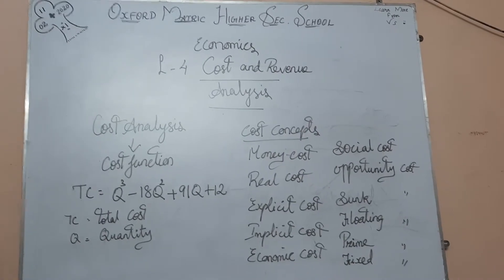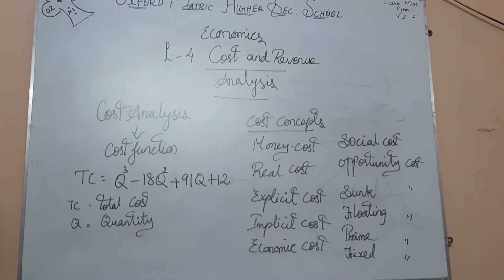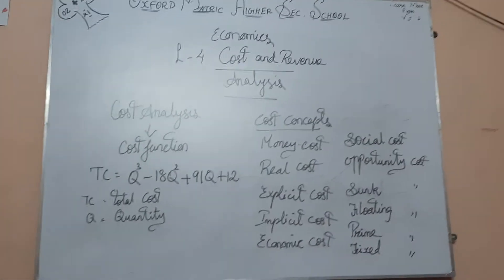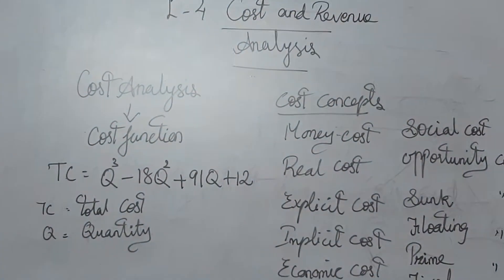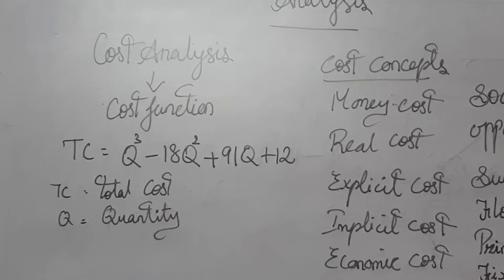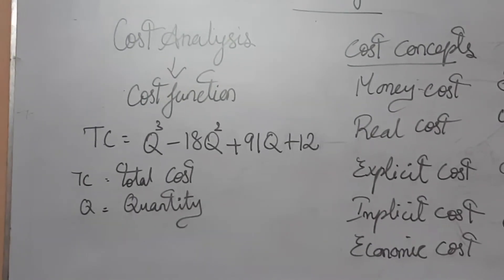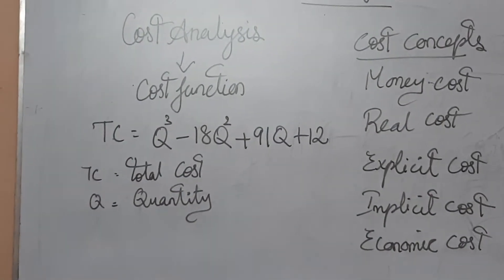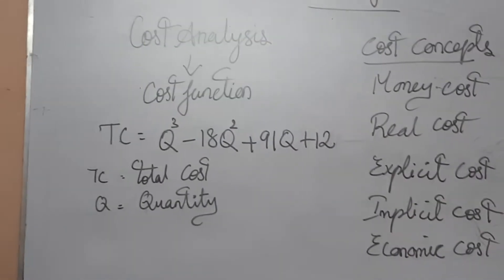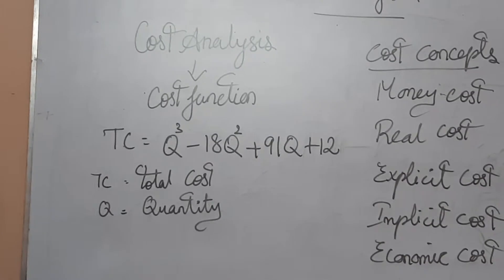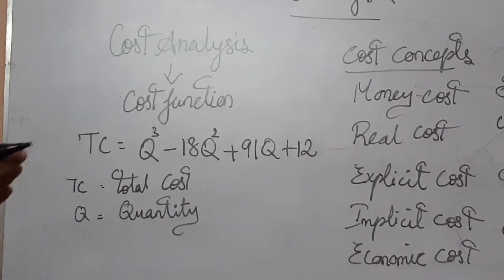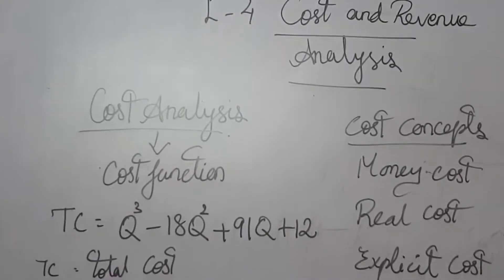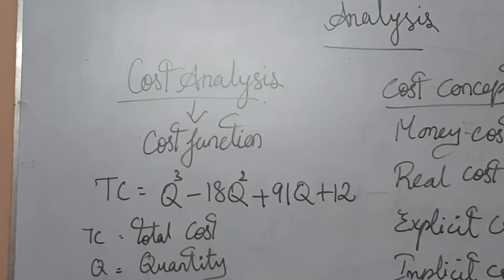Revenue means income. First we will learn about cost. Cost analysis refers to the total expenses incurred in the production of a commodity — how much money we are spending to produce a product. That is called cost analysis.